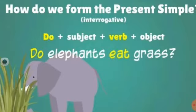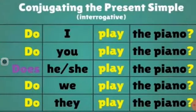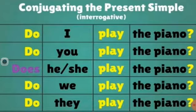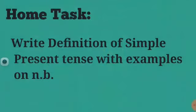Conjugating the present simple interrogative: do or does comes first, then the subject, then the first form of the verb, then the object. Do elephants eat grass? You must add a question mark at the end of the sentence — without a question mark, your sentence cannot be interrogative. Do I play the piano? Do you play the piano? Does he play the piano? With singulars, we use does. Does she play the piano? Do we play the piano? Do they play the piano?